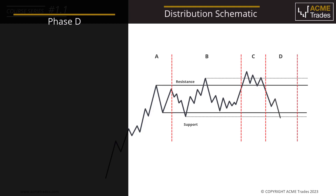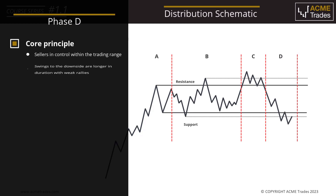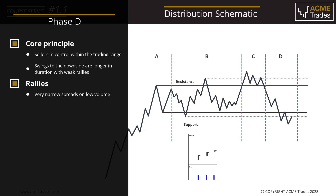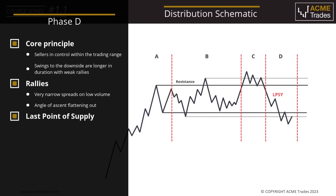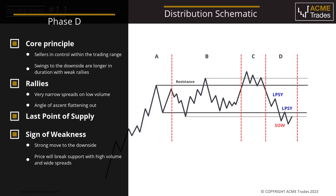Phase D within distribution — in simple terms we want to see sellers in control. We want to see swings to the downside that are longer in duration compared to poor, weak rallies that consist of narrow spreads and low volume. These weak rally highs would be labeled as LPSY — the last point of supply. Evidence of a strong move down will be labeled as a sign of weakness, especially if we break structural areas. Price will break support lows from the distribution range with high volume and wide spreads, showing the commitment of sellers for lower prices.